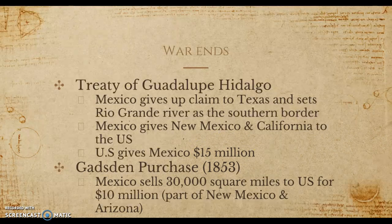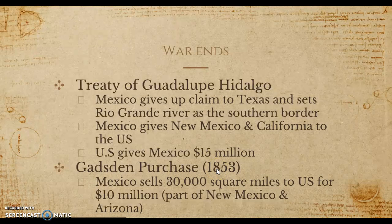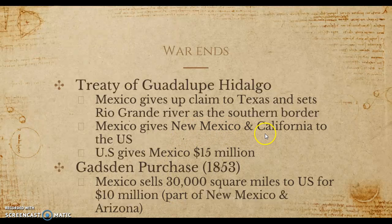Just a few years after this, Mexico sold even more land — comparatively much smaller — during the Gadsden Purchase of 1853. This is where Mexico sold about 30,000 square miles to the United States for $10 million, essentially parts of New Mexico and Arizona. That's a somewhat fairer price comparatively, since this is a much smaller area than California, New Mexico, and Texas, which the U.S. got for $15 million by winning the war.